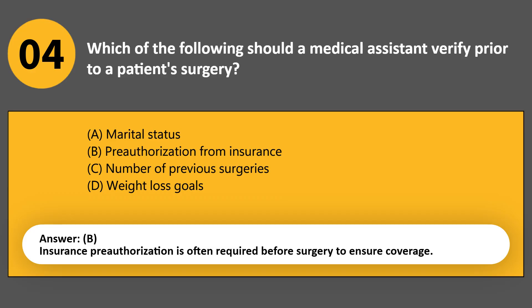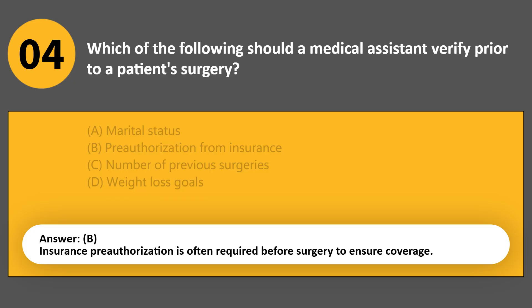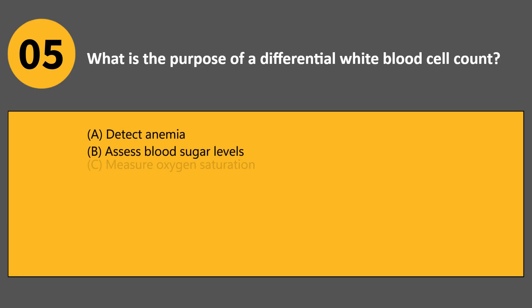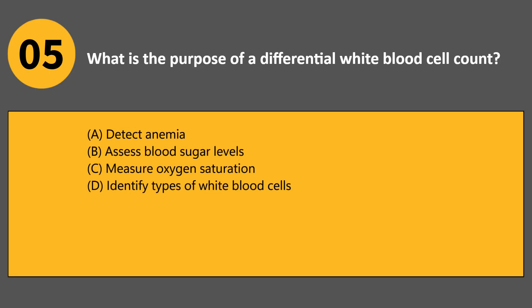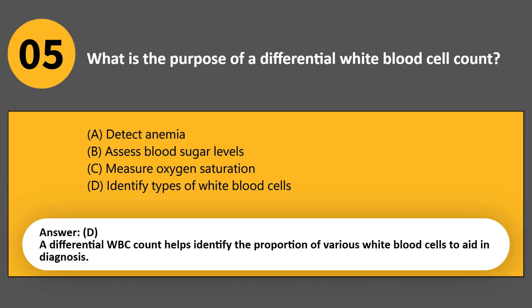What is the purpose of a differential white blood cell count? A. Detect anemia. B. Assess blood sugar levels. C. Measure oxygen saturation. D. Identify types of white blood cells. Answer D. A differential WBC count helps identify the proportion of various white blood cells to aid in diagnosis.